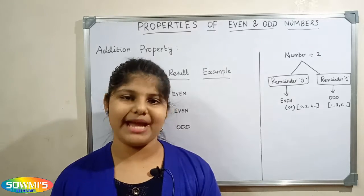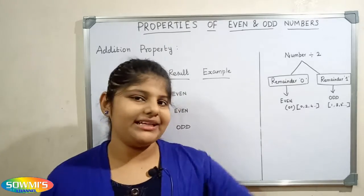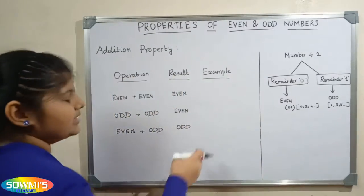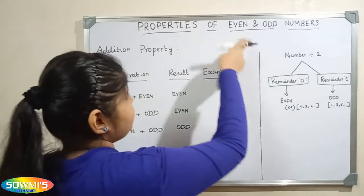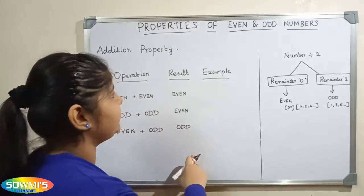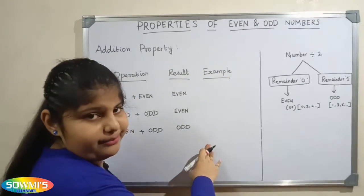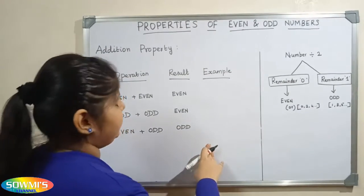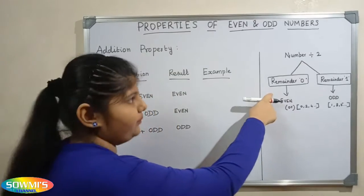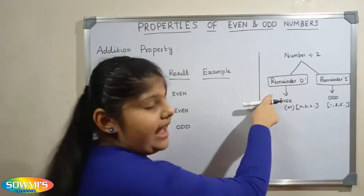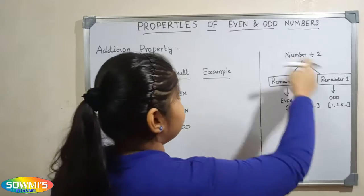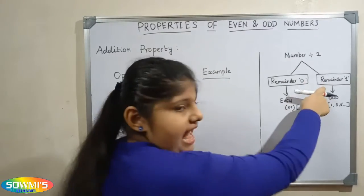Come on, let's go to the video. Before we see the properties of even and odd numbers, first we have to know what is meant by even and odd numbers. An even number is divisible by 2 and leaves the remainder as 0. An odd number is not completely divisible by 2 and leaves the remainder as 1.